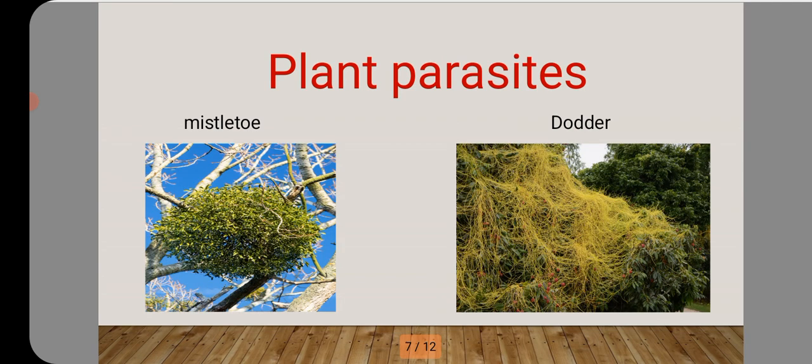We also have plant parasites. The first one is what we call the mistletoe, and the other one is the dodder. When you see these plants, they are very beautiful — a nice green-yellowish colour. But they are very harmful. They are always seen on their host plants for survival, food and shelter. Don't just look at how beautiful they are; they always cause harm. They are parasites.